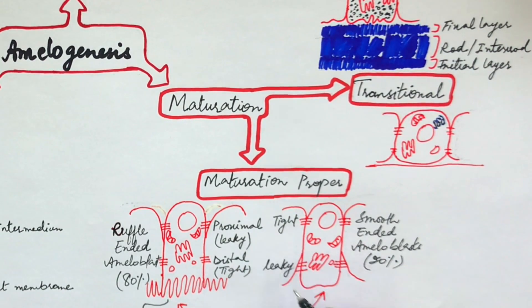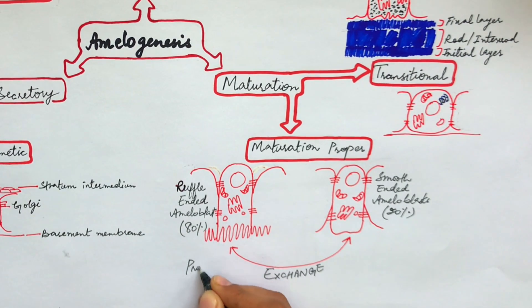The ruffle-ended ameloblasts degrade enamel proteins by secreting certain proteases. Some of the degraded proteins are diffused into the leaky proximal junctions of the smooth-ended ameloblasts, and some of these are engulfed by the ruffle-ended ameloblasts by the process of endocytosis.